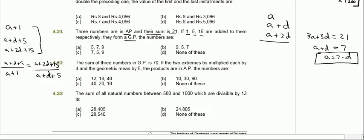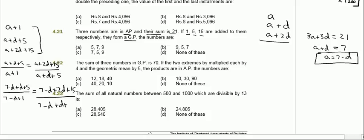We replace a with 7 minus d. So it becomes: (7 minus d plus d plus 5) divided by (7 minus d plus 1) is equal to (7 minus d plus 2d plus 15) divided by (7 minus d plus d plus 5).